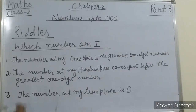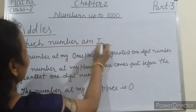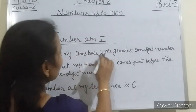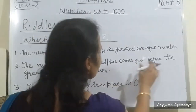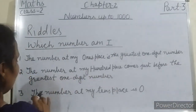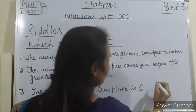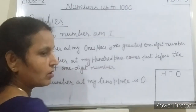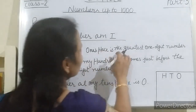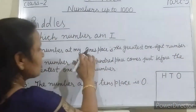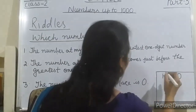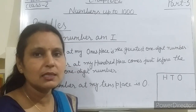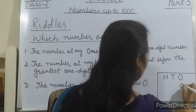Now, always start riddles, students. See — which number am I? The number at my ones place is the greatest 1-digit number. The number at my hundreds place comes just before the greatest 1-digit number. The number at my tens place is 0. So try to solve this. The greatest 1-digit number is 9 — so at the ones place, write 9.